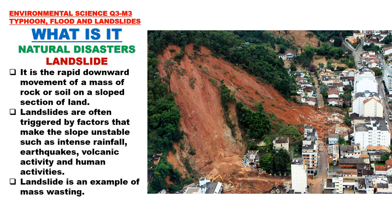The third natural disaster we will discuss is landslide. It is the rapid downward movement of a mass of rock or soil on a sloped section of land. Landslides are often triggered by factors that make the slope unstable, such as intense rainfall, earthquakes, volcanic activity, and human activities. Landslide is an example of mass wasting.